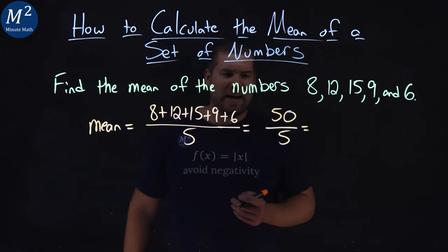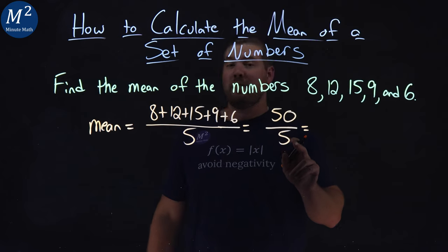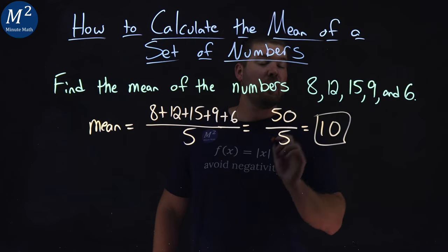But you can always take your time. I think you can add. Now 50 divided by 5, that's just 10. And there we have it.